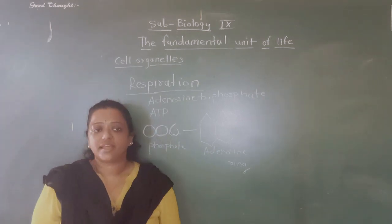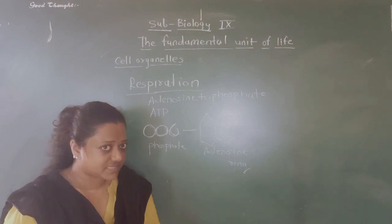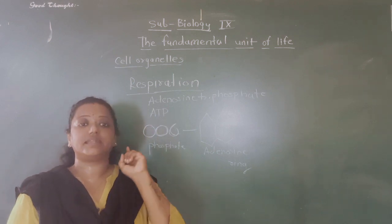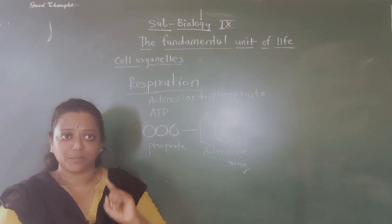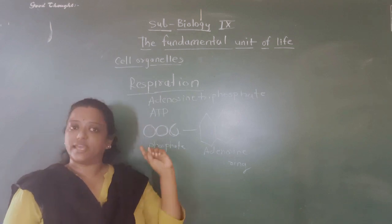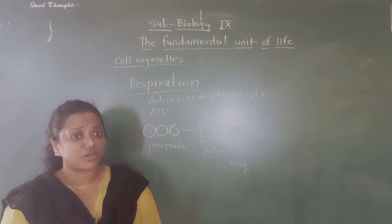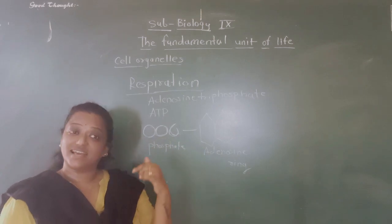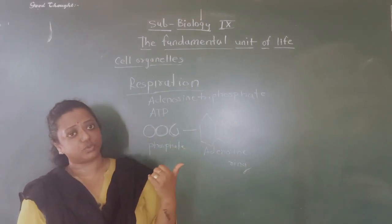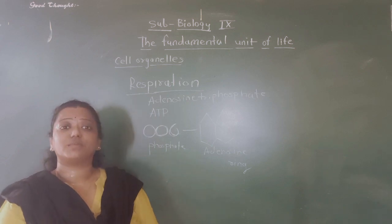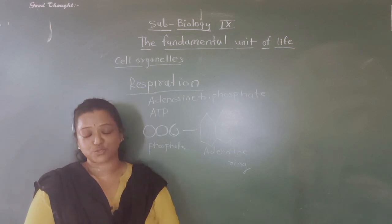So mitochondria is called the powerhouse of the cell, and ATP is called the energy currency of the body. Various chemical, anabolic, catabolic, and metabolic processes take place in the mitochondria. I hope the topic of mitochondria is clear for you. Thank you so much.